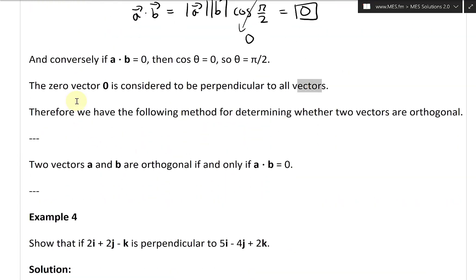Therefore, we have the following method for determining whether two vectors are orthogonal. Two vectors a and b are orthogonal or perpendicular if and only if the dot product is equal to zero.